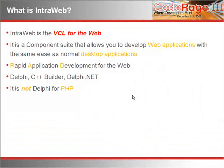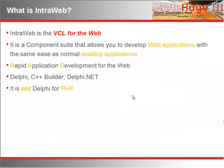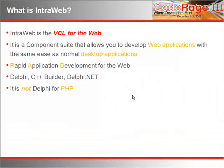Interweb is the VCL for the Web — sometimes there's some confusion. The VCL for the Web is just a name or branding for Interweb, so both names refer to the same product. Interweb is the component framework that allows you to develop web applications in the same simple and easy-to-use way you know from Delphi. It's rapid application development for the Web with Delphi.